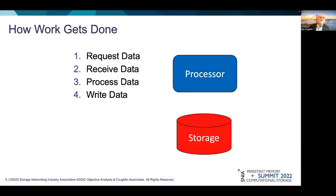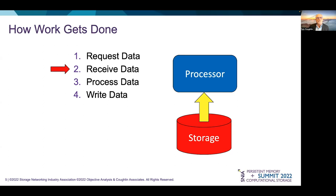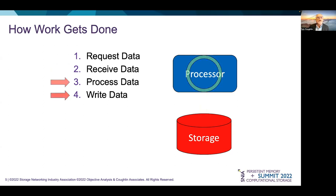This is a typical data processing system, with a processor talking to storage through some communications channel, most likely the network. How does the data move in this system? First, the processor requests data — this is quick and simple. Data is then sent to the processor. The processor processes the data, and then data is moved back into storage. Moving the data from storage to the processor and back again, numbers 2 and 4 in this sequence, consumes a lot of time and energy. How can data movement be accelerated?